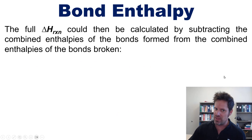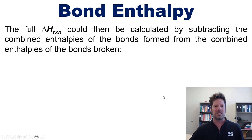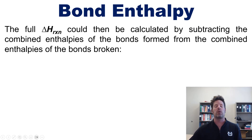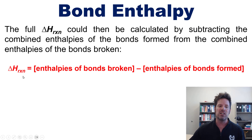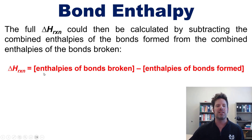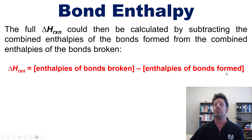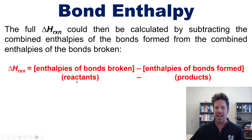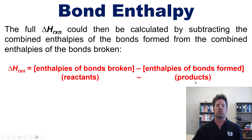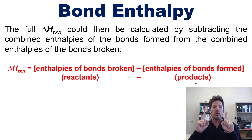The full delta H of reaction can then be calculated by subtracting the combined enthalpies of the bonds formed from the combined enthalpies of the bonds broken, according to this equation. In other words, delta H of reaction using the bond enthalpy approach is: enthalpies of bonds broken minus enthalpies of bonds formed — which is essentially the bonds in the reactants minus the enthalpies of the bonds in the products. So it's reactants minus products, all with bond enthalpies.